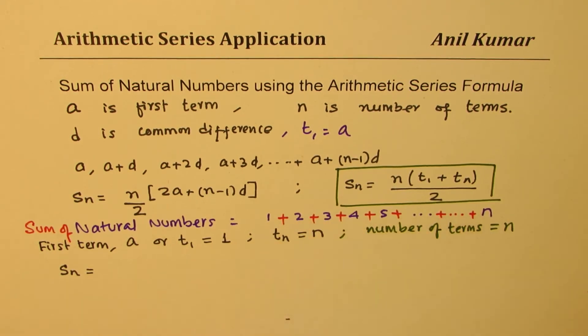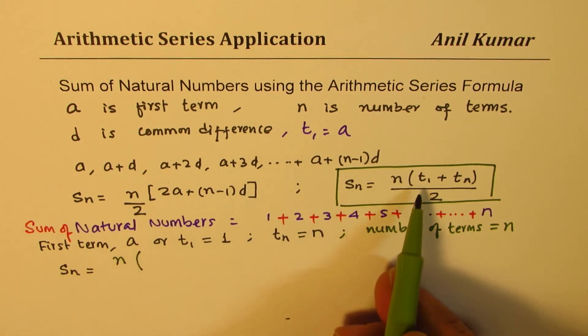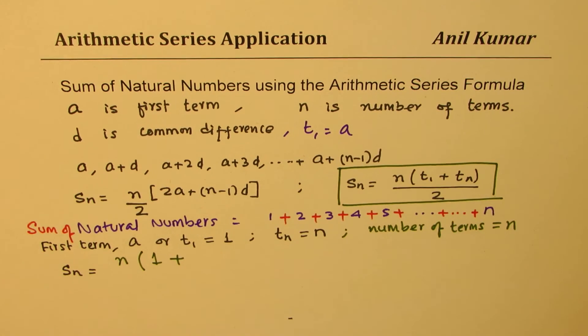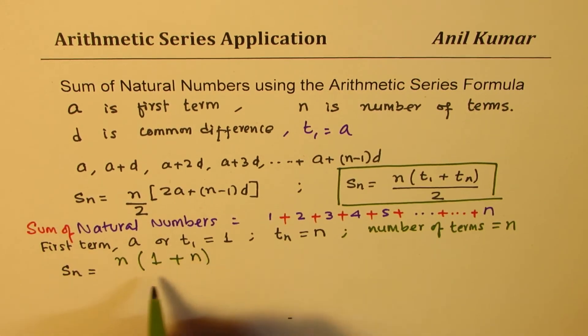1, 2, 3, 4, the number of terms is also n. And the nth term is also n. The last term is also n. So using these values in the given formula, what do we get? We get n, number of terms are n. The first term for us is 1. So 1 plus nth term is again n divided by 2.